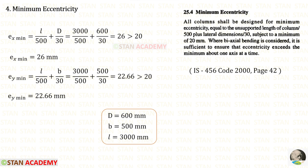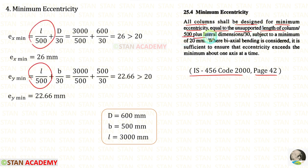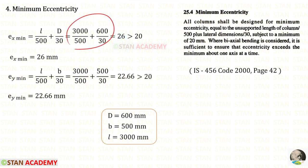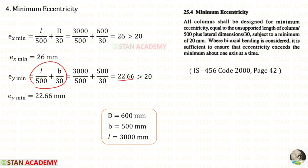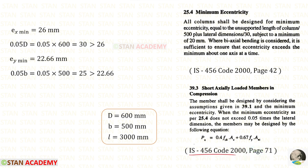Now we are going to find whether the column is axially loaded by finding the minimum eccentricity. Let us open the code book page number 42. All columns shall be designed for minimum eccentricity equal to the unsupported length divided by 500 plus lateral dimensions divided by 30, subject to a minimum of 20. Calculating EX minimum gives 26 mm, which is the maximum of the two values, so EX minimum is 26 mm. EY minimum calculates to 22.66 mm, which is more than 20 mm, so EY minimum is 22.66 mm.